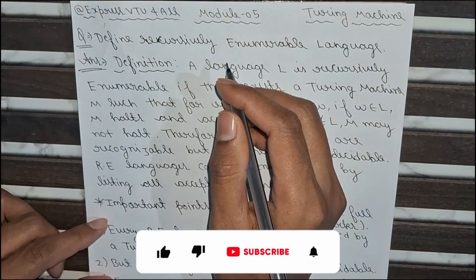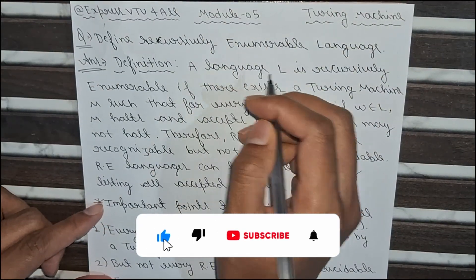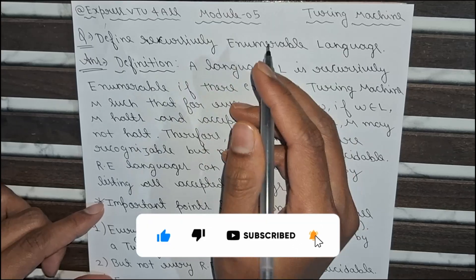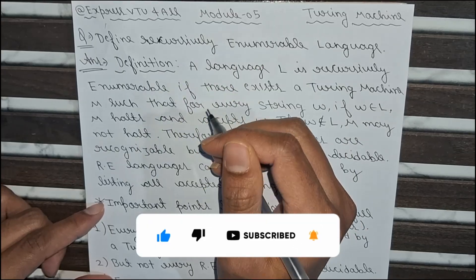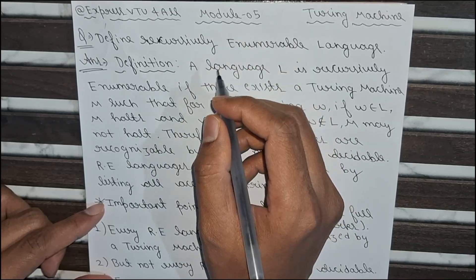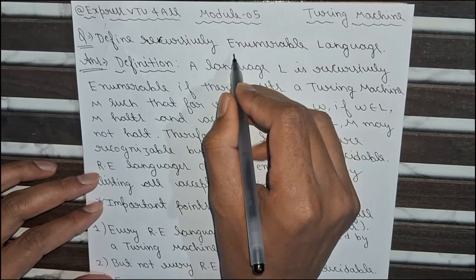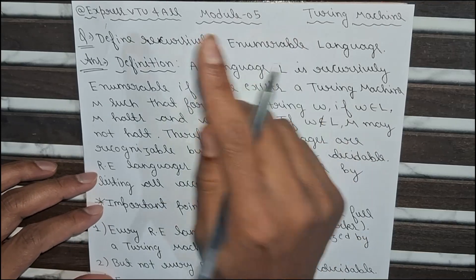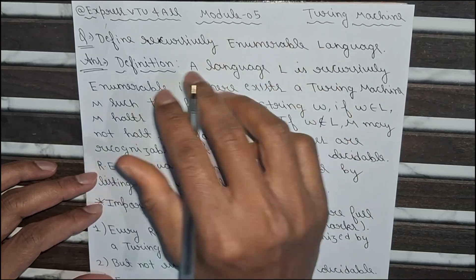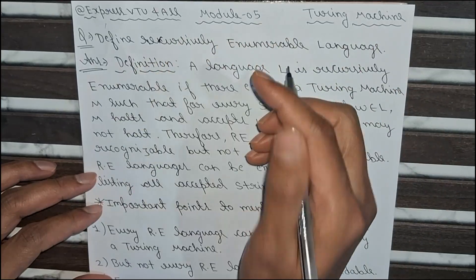Hello everyone, welcome back to Express Video for All. In this video we will understand one of the most important theory concepts of module 5: recursively enumerable language. The word enumerable means something that can be numerated or listed out, such as a finite series or set.